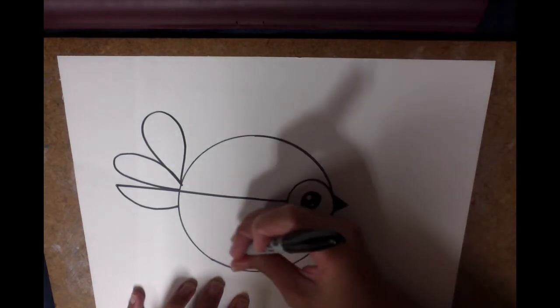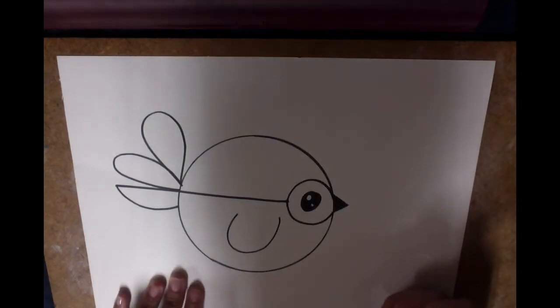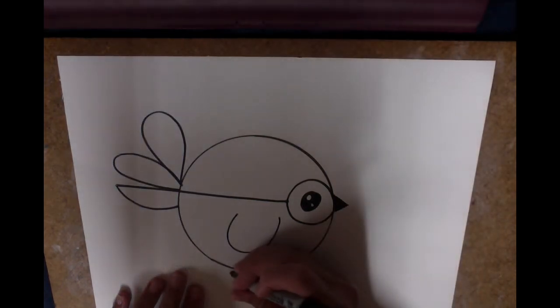And now it's time for a wing. This is just a curve on the side of the body, or maybe like a U-shape. If you have your own way of drawing a wing, draw your own way.